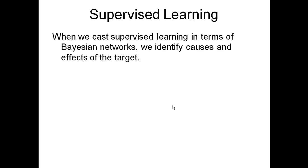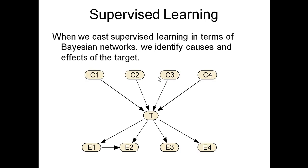Supervised learning is the purpose of this talk, considering supervised learning using Bayesian networks. When you do learning or prediction using Bayesian networks, you identify the causes and effects — other methods don't do that. Causes point to the target variable, and effects point out of the variable. They have different independency situations. The problem is to predict the value of this target based on values of these causes and values of these effects.